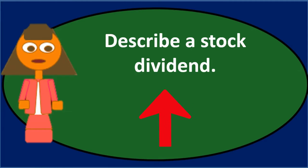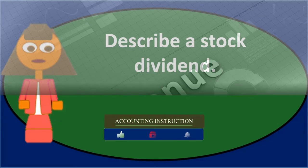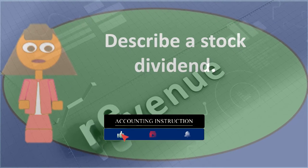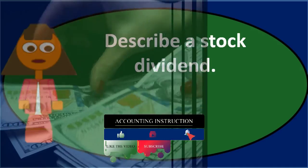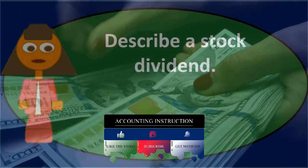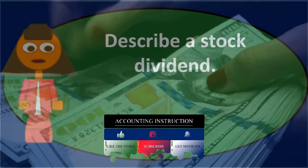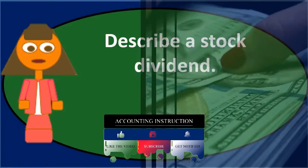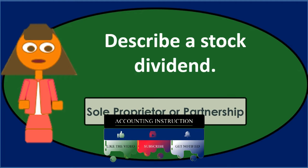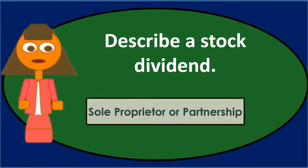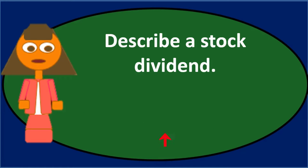Normally you'd have a cash dividend, which is similar to a draw for a sole proprietor or partnership. The goal of any business — whether a sole proprietorship, partnership, or corporation — is to generate revenue, and then the business pays that revenue typically in the form of cash to the owners so they can use it for personal use.